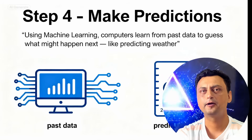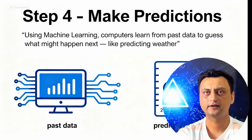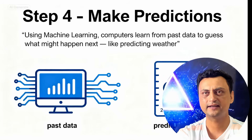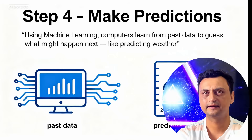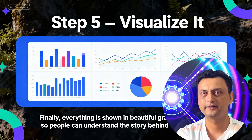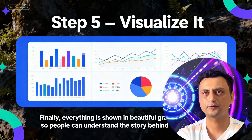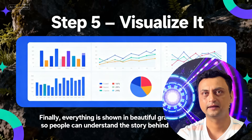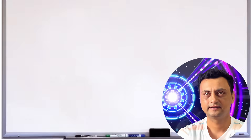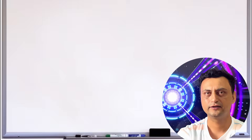Step 4: Make predictions — using machine learning, computers learn from past data to guess what might happen next, like predicting weather or traffic. Step 5: Visualize it — finally, everything is shown in beautiful graphs and charts so people can understand the story behind the numbers. Let's make it real with some everyday examples of data science in action.